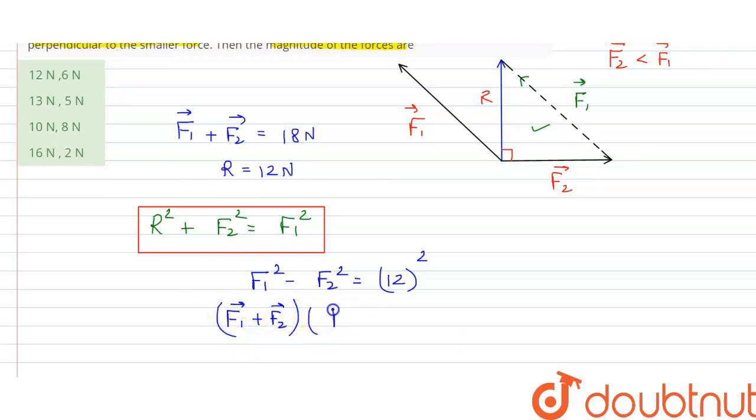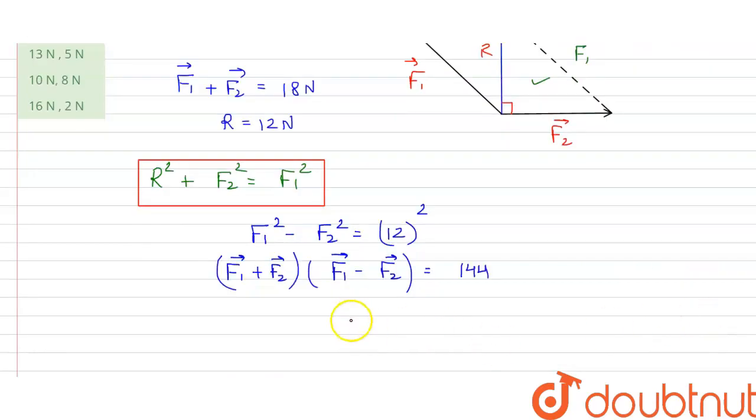...multiply by F1 vector minus F2 vector is equal to 12 squared, which is 144. And we know the value of F1 plus F2, that is given in the question, that is 18 Newton. From here our F1 vector minus F2 vector comes out to be 8 Newton.